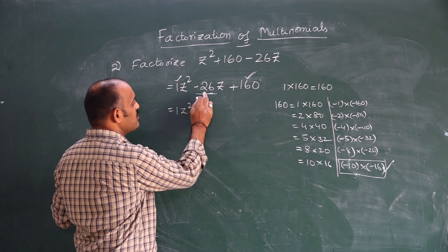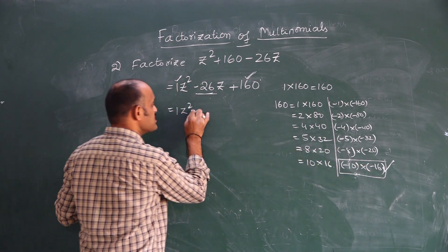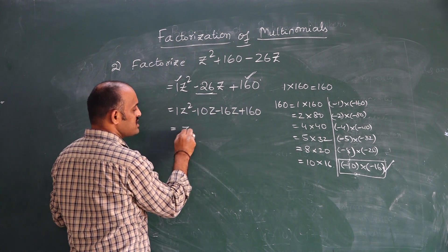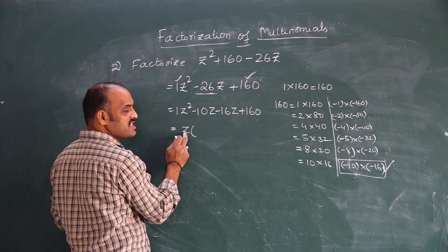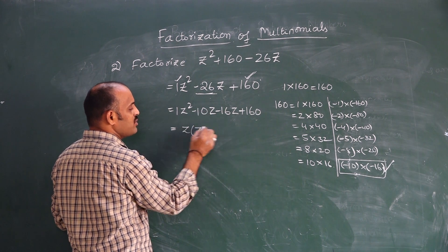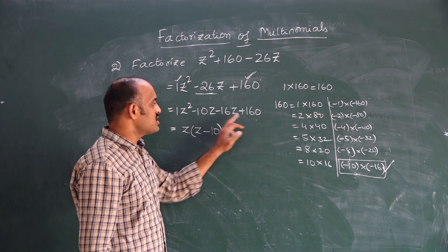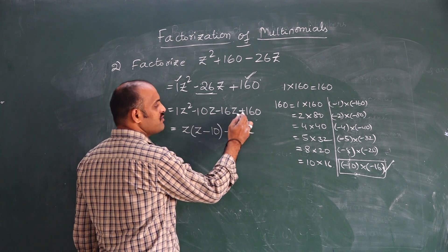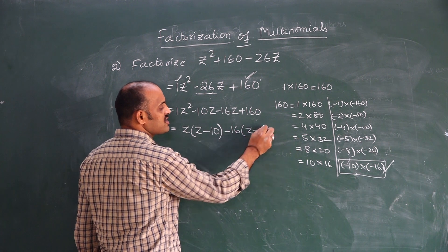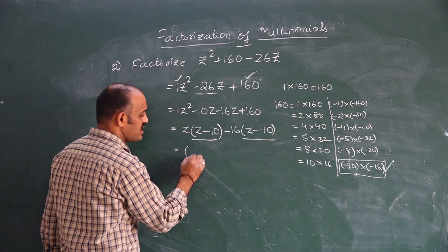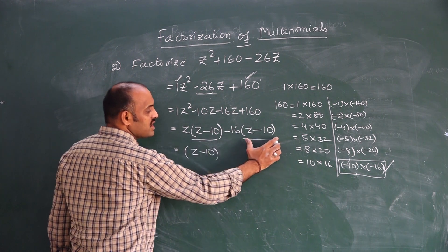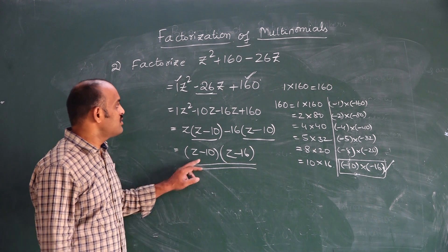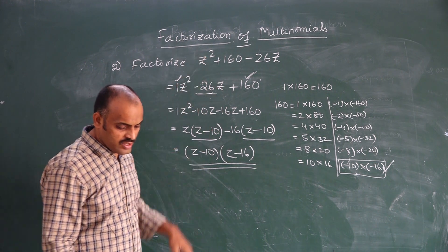So z² − 26z + 160 = z² − 10z − 16z + 160. In the first two terms, z can be taken common: z(z − 10). In the last two terms, −16 can be taken common: −16(z − 10). In both groups, (z − 10) is common. Taking (z − 10) common gives (z − 10)(z − 16). This is how we factorize the given polynomial.